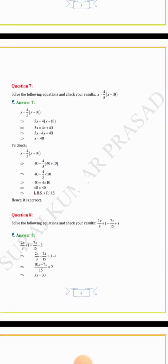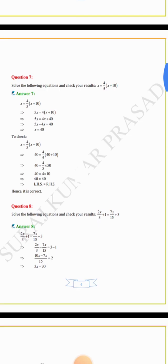Question number 7: solve x = (4/5)(x + 10). Multiplying both sides by 5: 5x = 4(x + 10), so 5x = 4x + 40. Then 5x minus 4x equals 40, giving x equals 40.